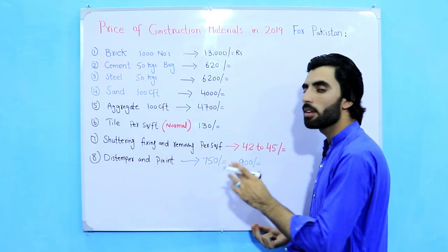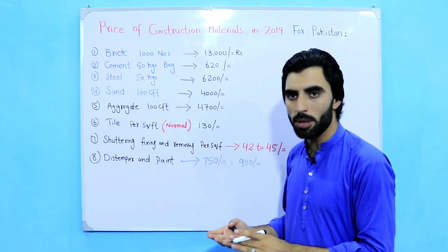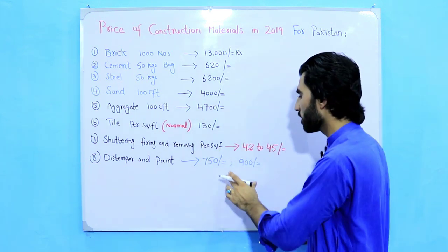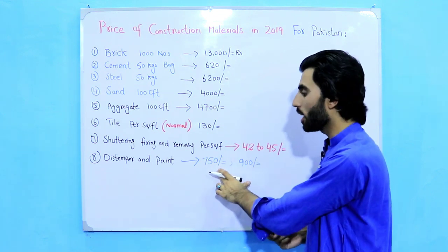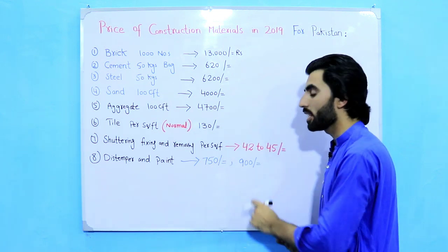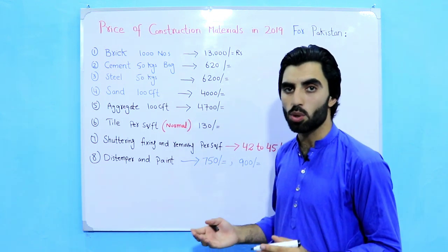For distemper and paint: the distemper price is 750 rupees per gallon, and paint is 900 rupees per gallon.